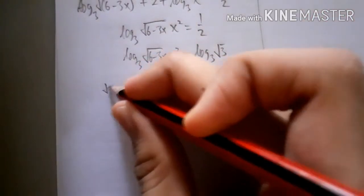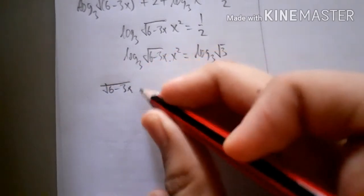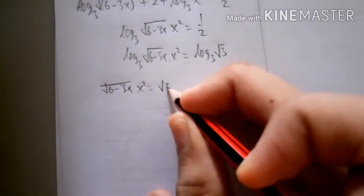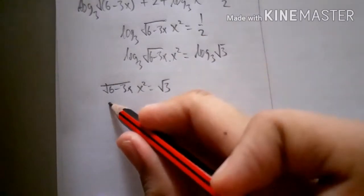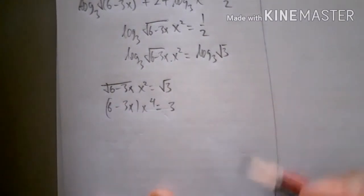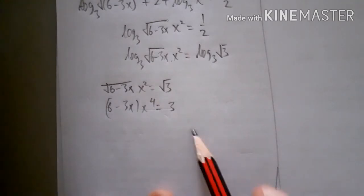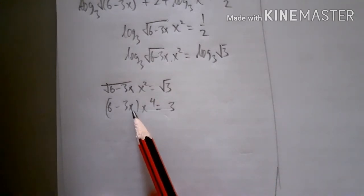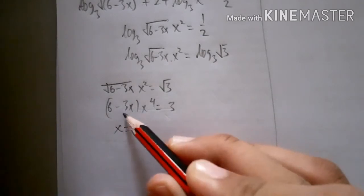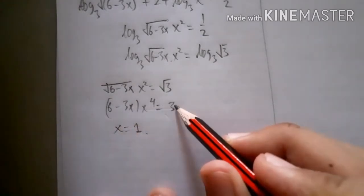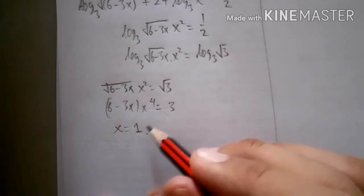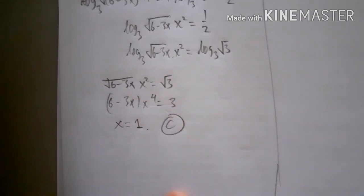This gives √(6 - 3x) · x² = √3, and squaring both sides: 3(6 - 3x) · x⁴ = 3. Substituting x = 1 satisfies the equation, so the answer for number 17 is x = 1, option C.